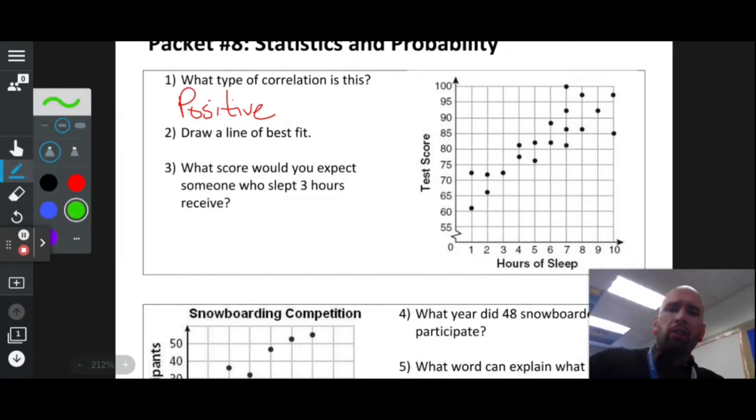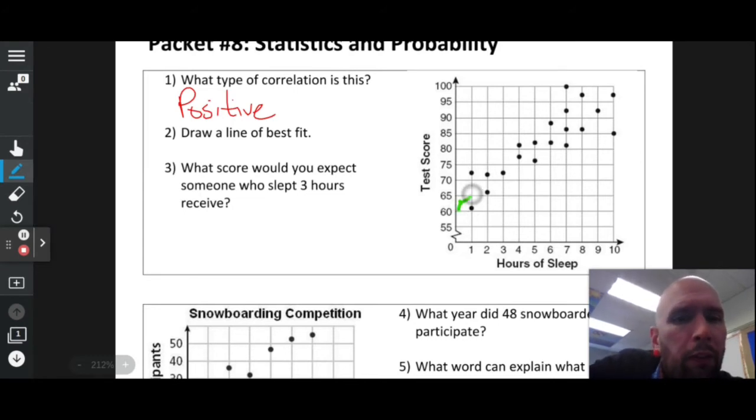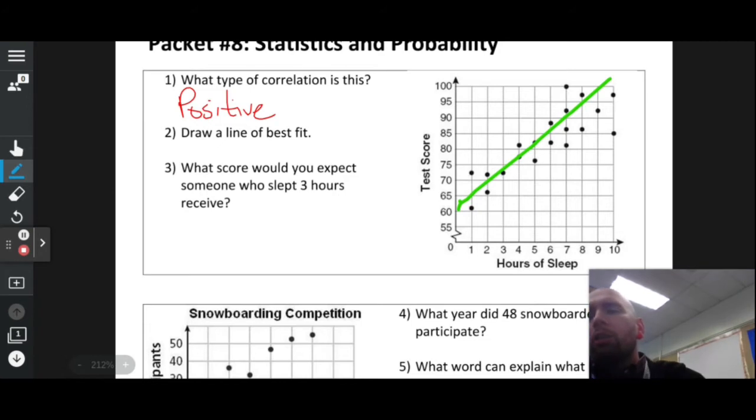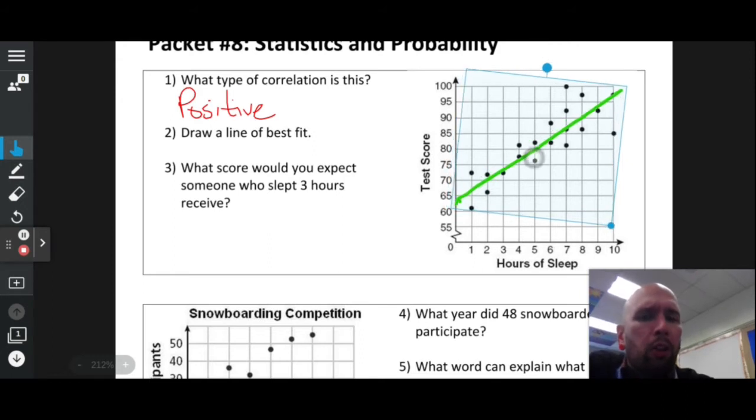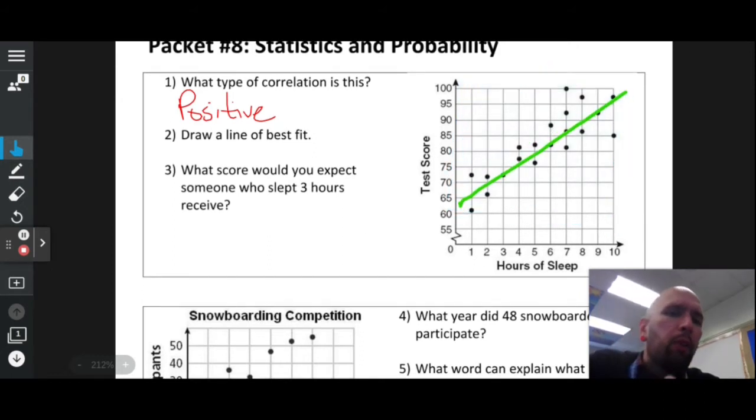Draw the line of best fit. Your line of best fit is going to be a line that sits as much in the middle of all of your dots as possible. It's not going to hit every single dot, but it basically follows where the dots go. If these dots were to keep going, we can make predictions based off of that. I'm happy with that line right there.